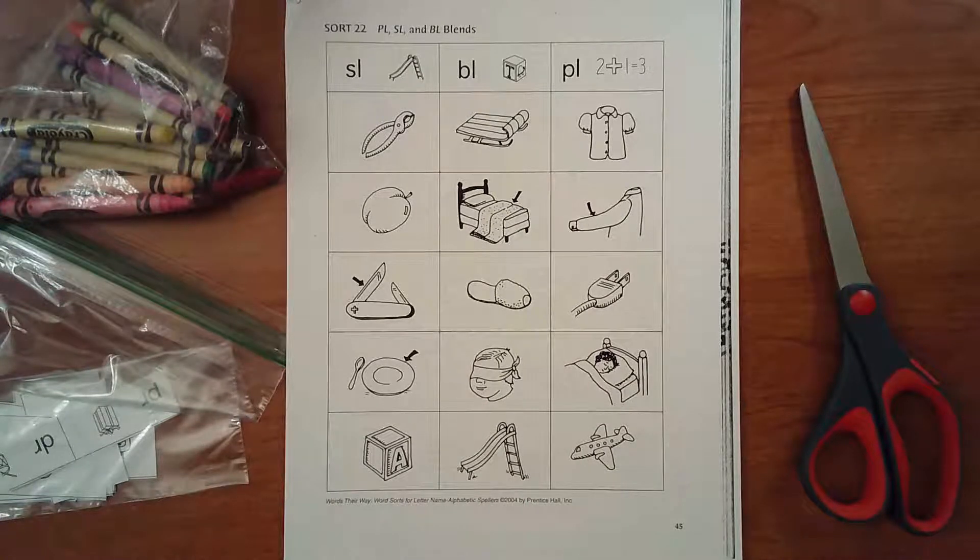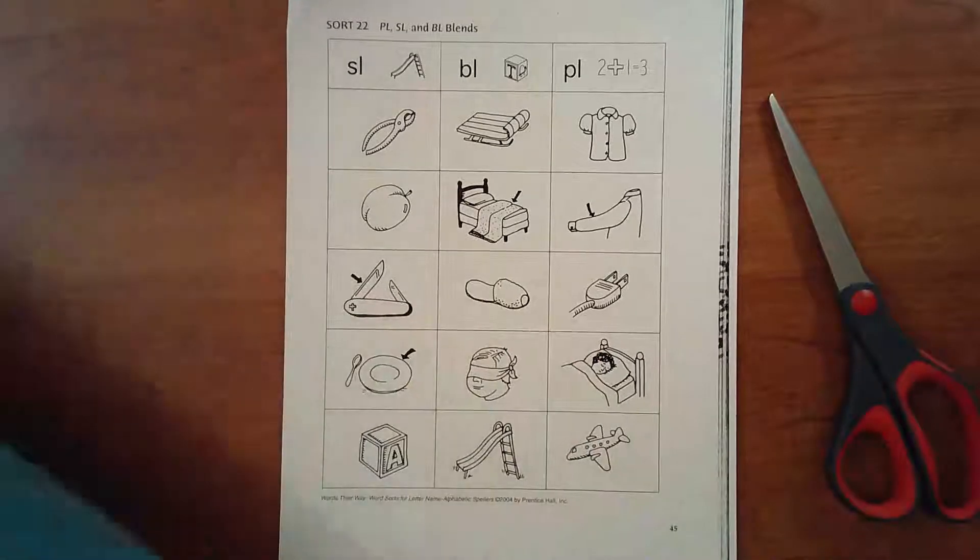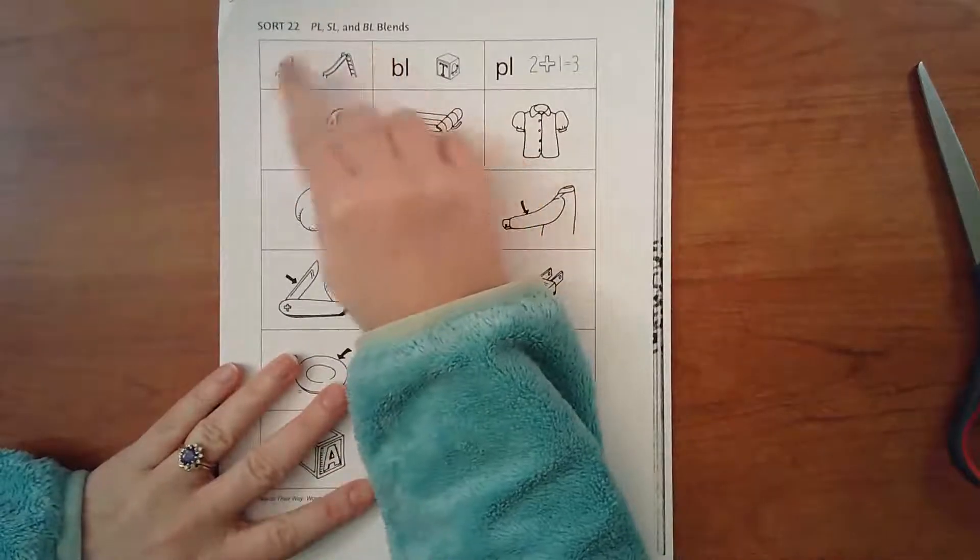Okay, welcome back. So we have a new sort today. Before we get to any of this other stuff, let's talk about it. We're doing the beginning blends, and we remember that a blend is when you can hear both of the different sounds of the letters but it goes quickly.